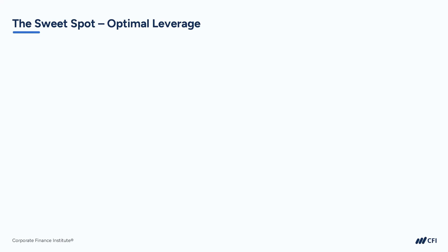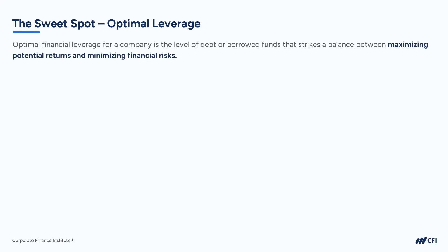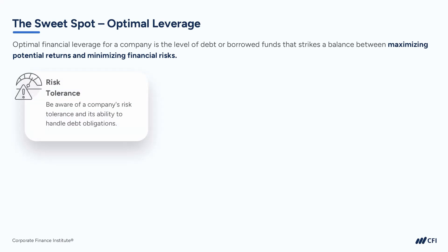Let's talk about optimal financial leverage, or what I like to call the leverage sweet spot. Optimal financial leverage is that level of debt or borrowed funds that really strikes a balance between maximizing returns and minimizing financial risks. It's really about taking on the right amount of debt — not too little and not too much. It's the point at which the company is leveraging its capital structure to create the highest value. Determining this leverage sweet spot involves careful consideration of factors such as the company's risk tolerance and its ability to handle debt obligations without compromising its financial stability and solvency.